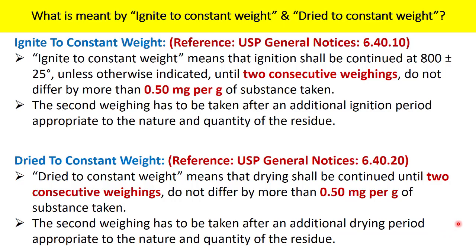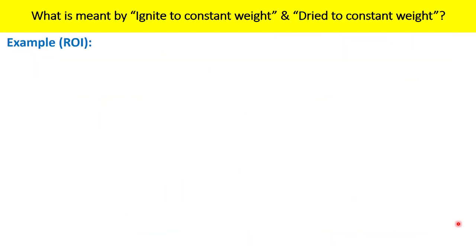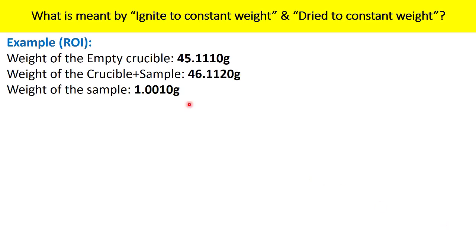Now let us understand this concept with the help of one example using residue on ignition testing. These are the weighing details. The weight of the empty crucible is 45.1110 gram. You have taken the empty crucible which was already heated at a certain temperature, dried well, cooled in a desiccator, and weighed at 45.1110 gram. Then you added around 1 gram of sample and the weight of crucible plus sample was 46.1120 gram. The weight of the sample taken is therefore 1.0010 gram.